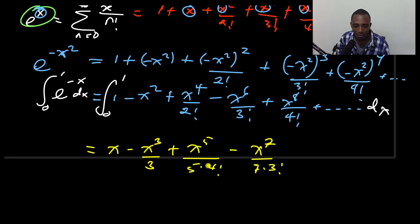Minus x to the power 7 divided by 7 times 3 factorial. So I've got 2 factorial here. Plus x to the power 9 divided by 9 times 4 factorial, and so on.